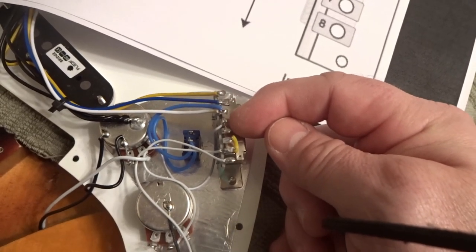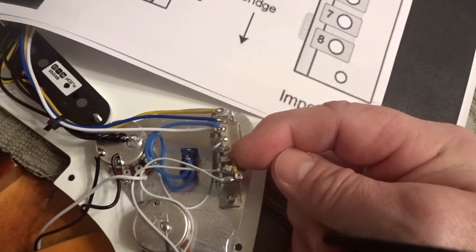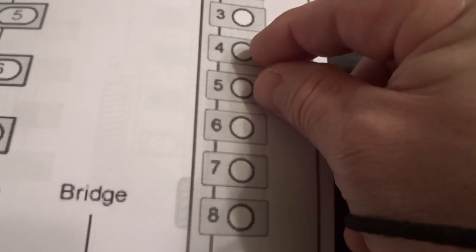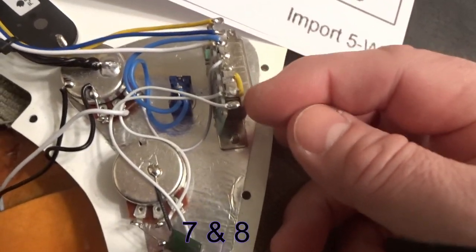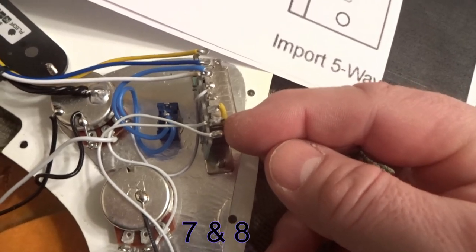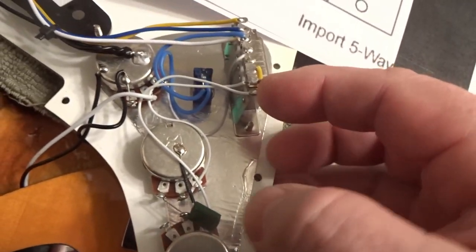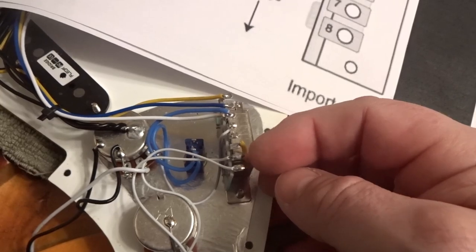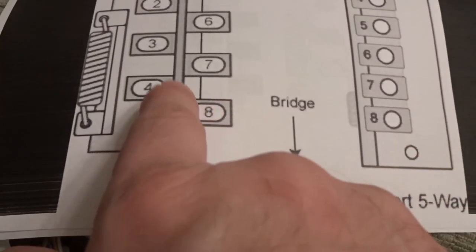You would have one, two, three, four, and that's your common here. And then they have that soldered right there to number five. So four and five are soldered together. And then six and seven are gonna go to your tone pots. And then this little jumper I put in is the bridge tone modification.